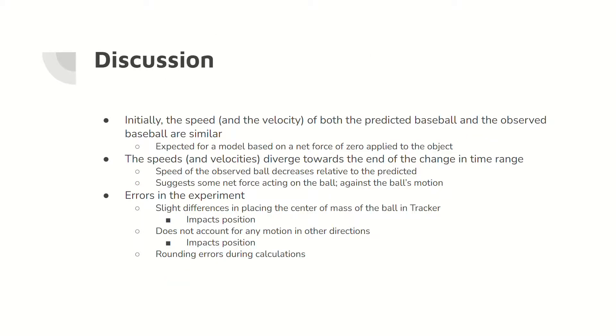Initially, the velocity of observed motion and predicted motion of the baseball shown on the position versus time graph as the slope are similar, as expected for a position versus time model based on a net force of zero applied to the object. However, the magnitude of the velocity of the observed motion decreases relative to the computational model at the end of the measured change in time. This decrease suggests that there is some net force acting on the baseball against the direction of motion of the baseball.